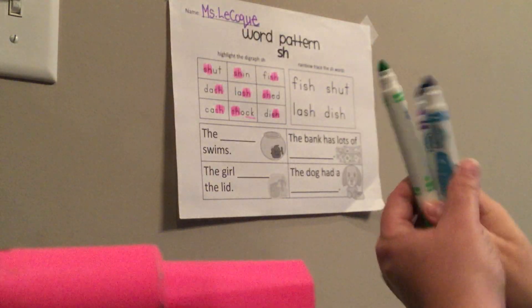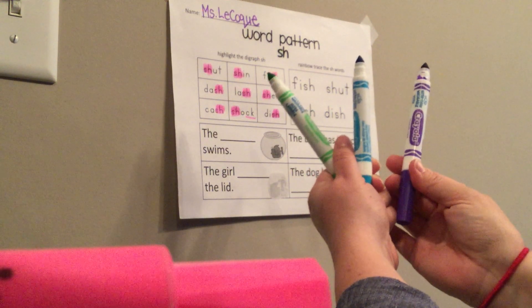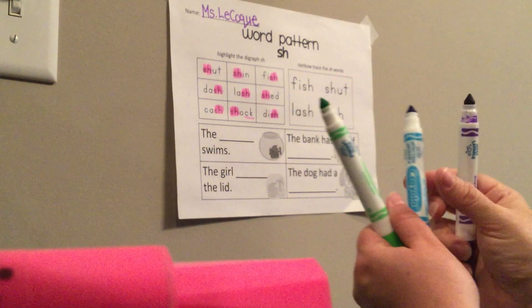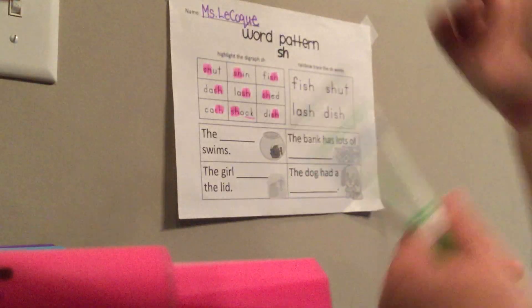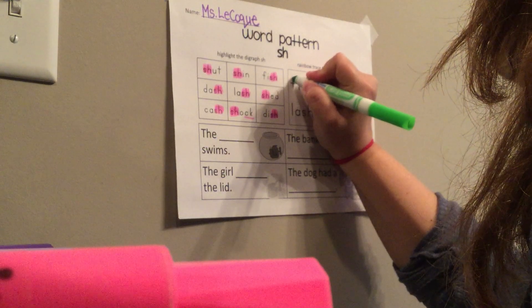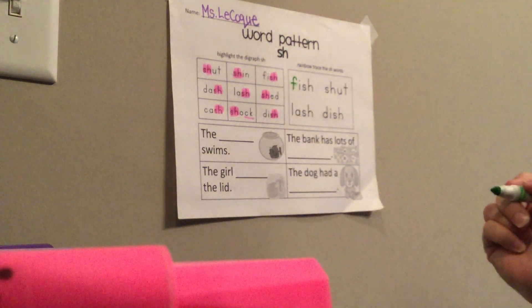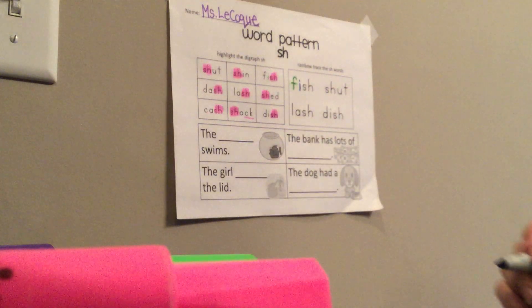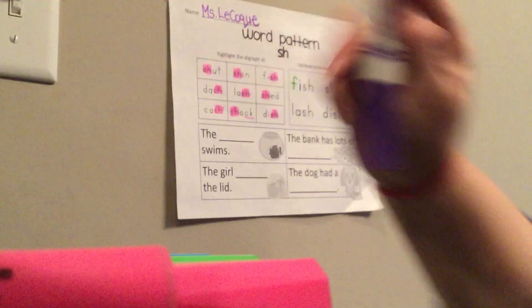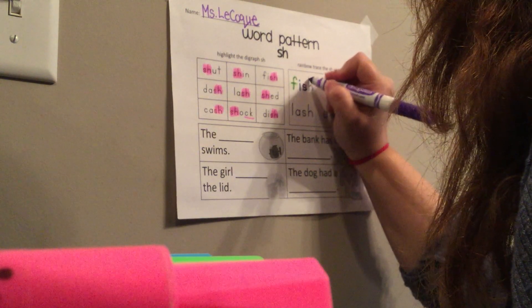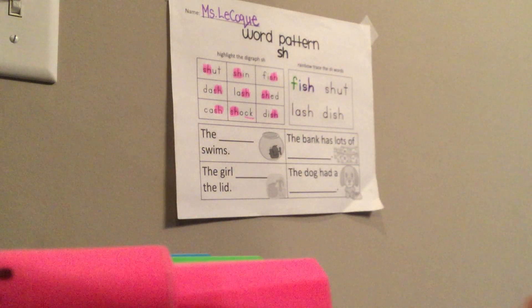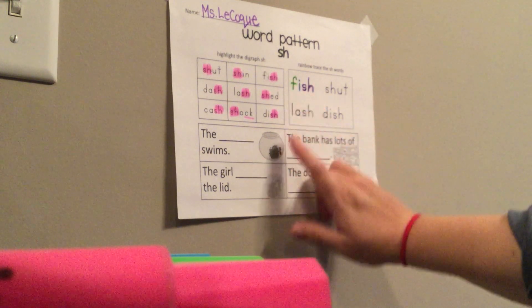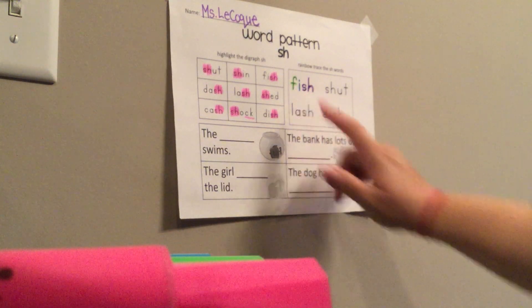Now friends, find three of your favorite colors. I'm going to use green, blue, and purple. This time we're going to rainbow trace the 'sh' words. Start with the first word with me. I'm going to use green — trace over the F. What's F say? F. Now I'm going to use blue for the I. What's I say? I. And S and H is going to be one color — I'll put them both purple. That says: sh. Let's sound it out: f, i, sh. F, i, sh.